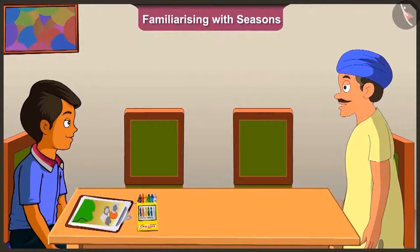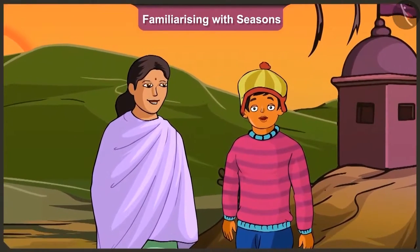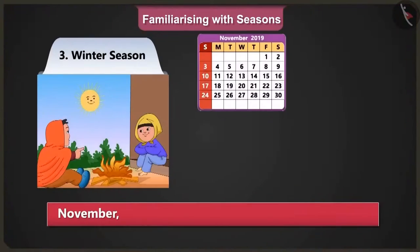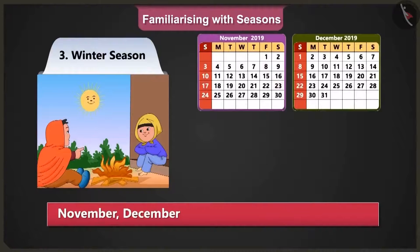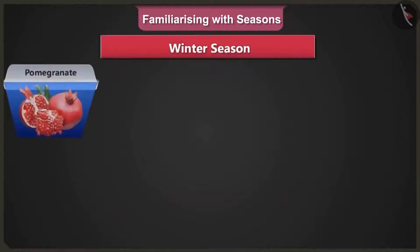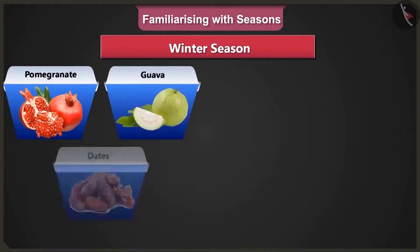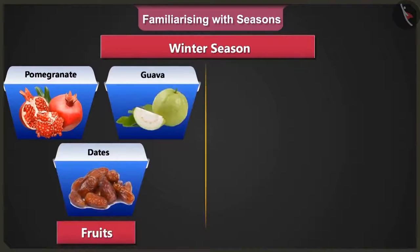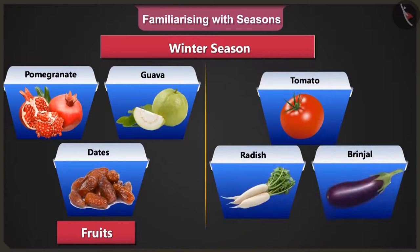After the monsoon season comes the cold season, meaning winter. To protect me from cold, mother makes me wear woolen clothes. November, December, January are the months of winter. In these months, pomegranate, guava, and dates are the fruits, and tomato, radish, and brinjal are the vegetables.